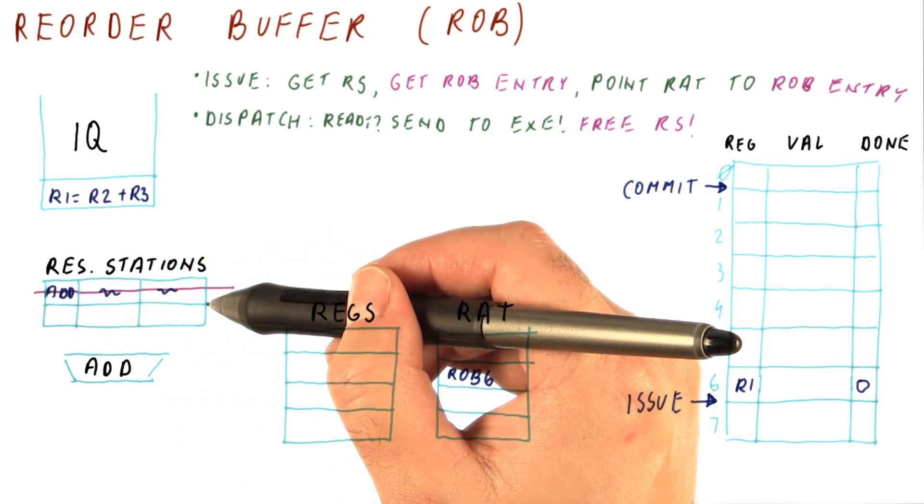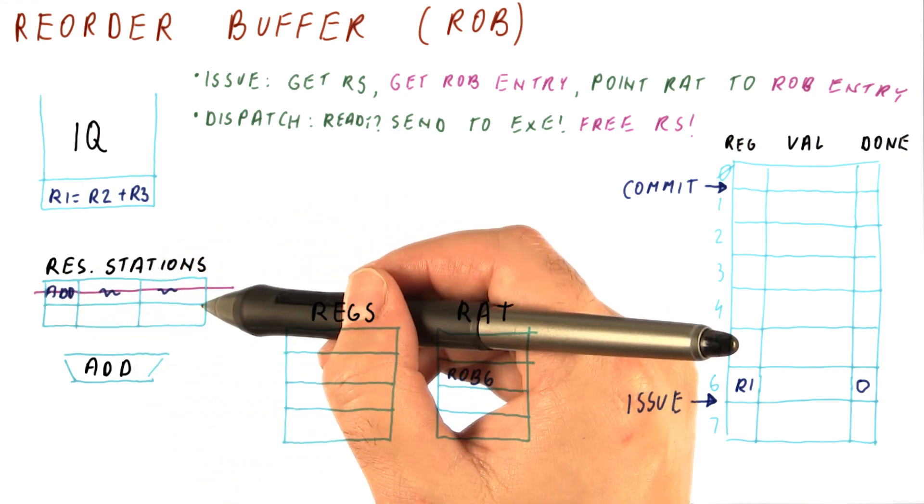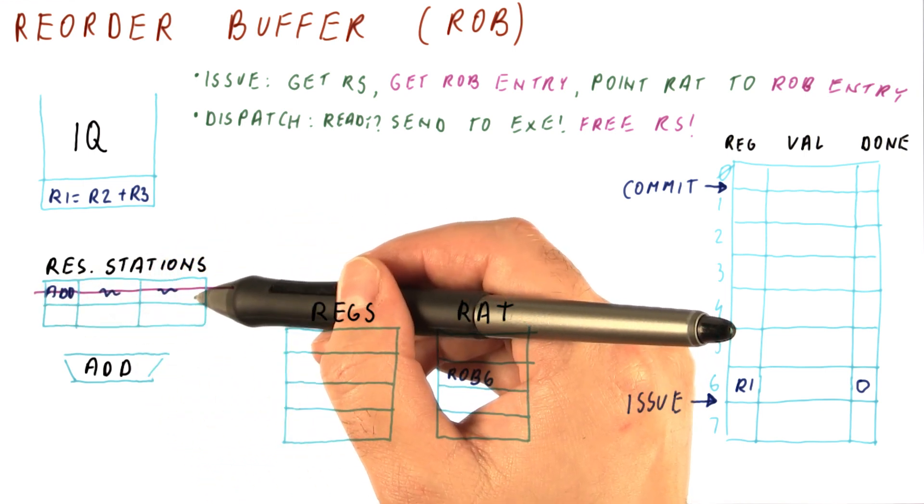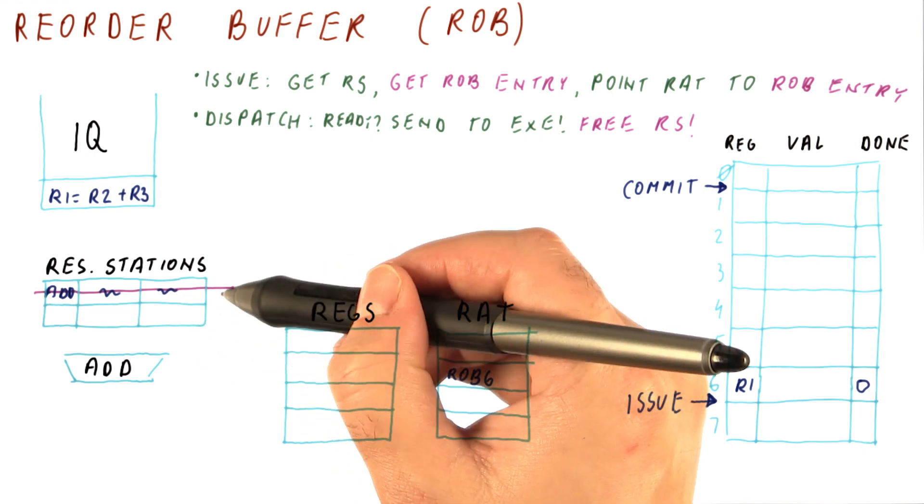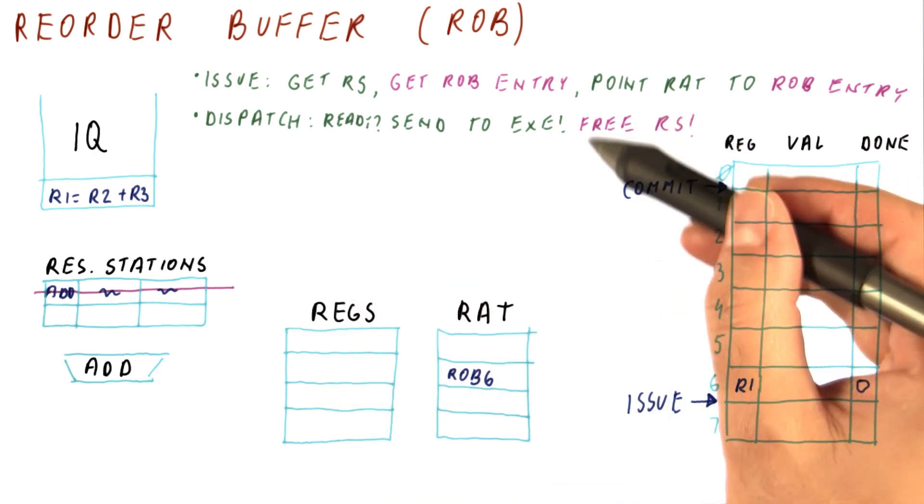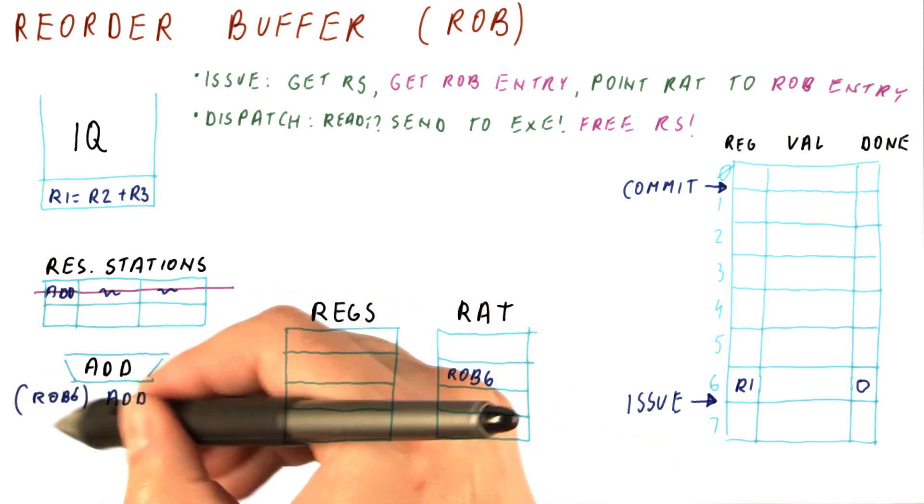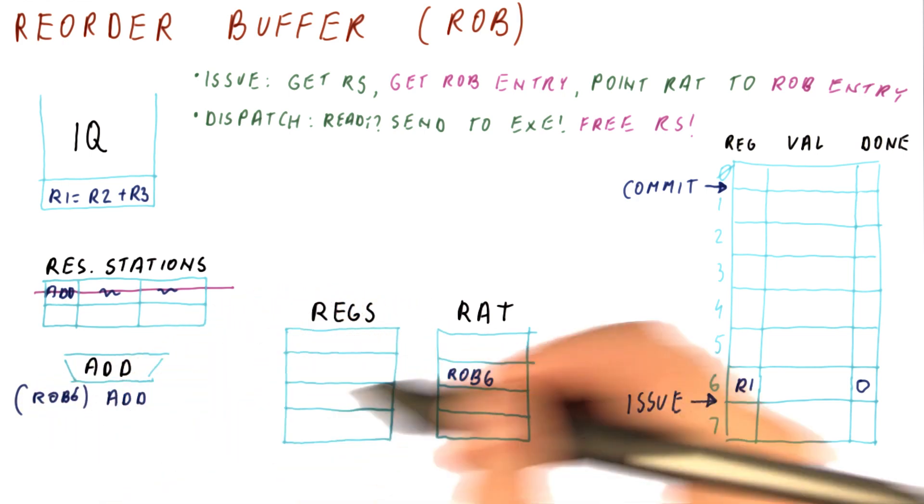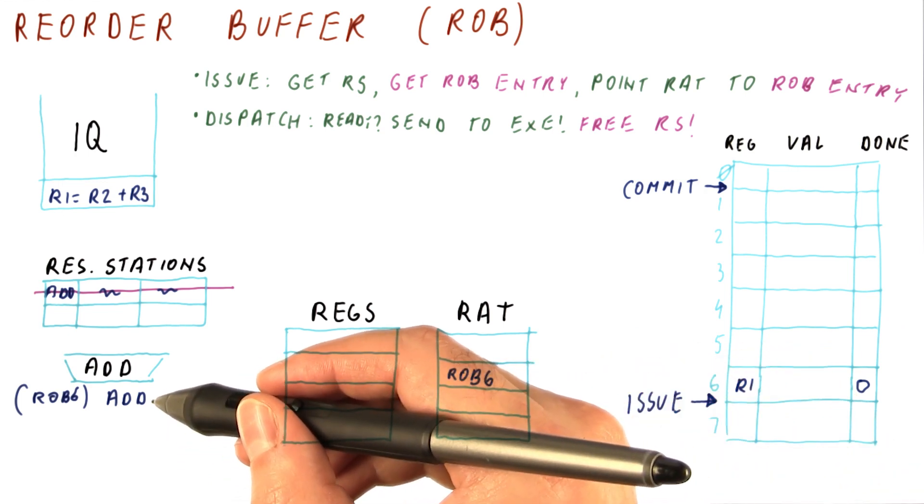So the reservation station now does only its primary job, which is wait for operands and capture them, and then figure out which instructions to dispatch. After that, the reservation station for the instruction is done, so we can free it. So now our add executes and carries with it the tag of ROB6, which is the name for its result. Eventually, it produces a result.